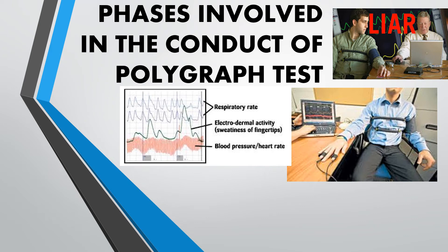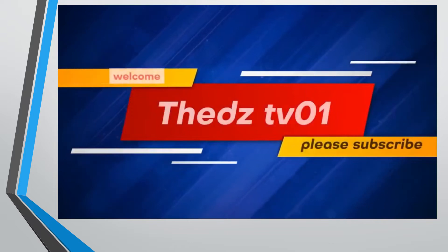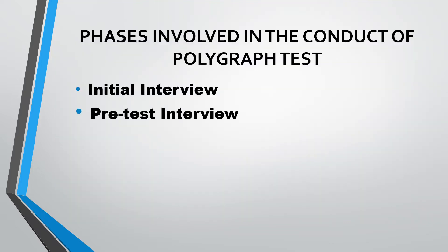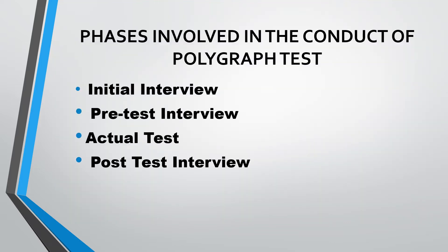Phases involved in the conduct of polygraph test. There are four phases in the conduct of a polygraph test: number one, initial interview; second, pre-test interview; third, actual test; and fourth, post-test interview.